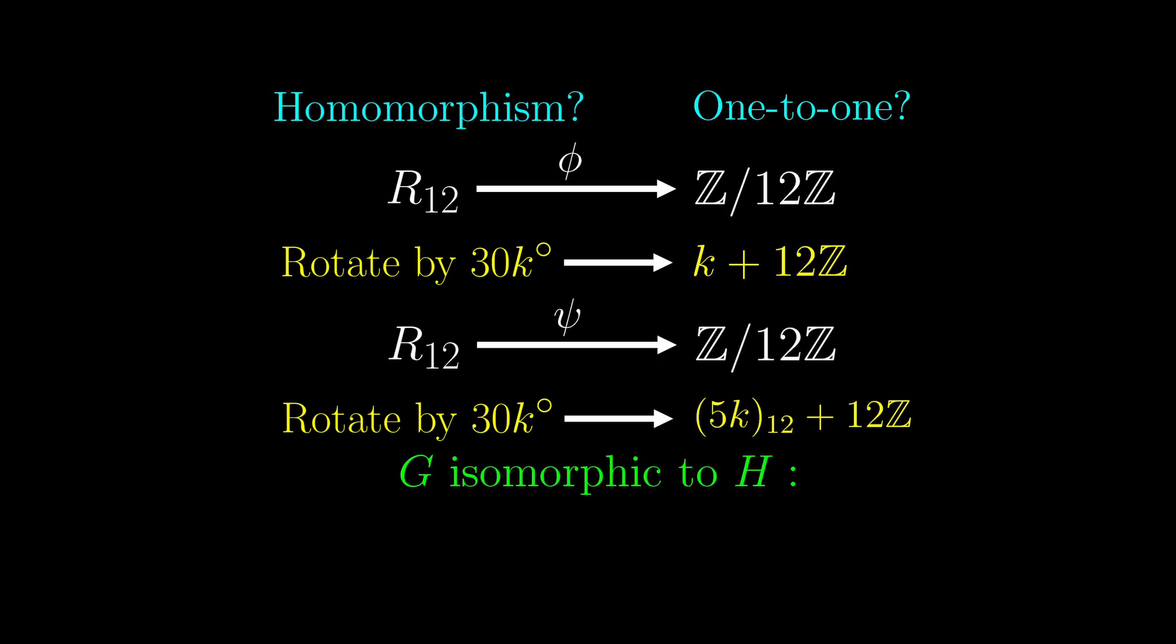In general, we say the group G is isomorphic to another group H if there is one isomorphism between the groups. We have already shown that the isomorphism might not be unique, but as long as there is an isomorphism, we will call these two groups isomorphic. So since there is at least one isomorphism between R12 and Z mod 12Z, we say these two groups are isomorphic to each other.